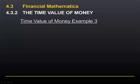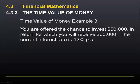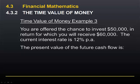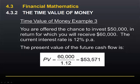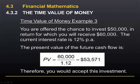Let's do one final example before we finish this module. You are offered the chance to invest $50,000 in return for which you will receive $60,000 in one year. The current interest rate is 12% per annum. What is the present value of this investment? The present value of the future cash flow is $53,571. In this case, the benefit outweighs the cost and therefore you would accept this investment.